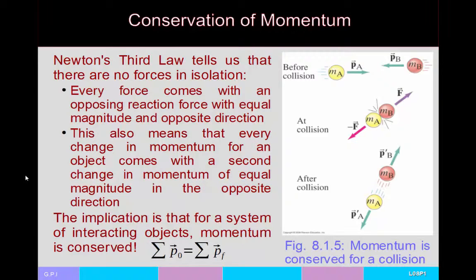Going back to Newton's laws applied to momentum: with Newton's third law, there are no forces in isolation. Every force — and hence every change in momentum per unit time — comes with a second change in momentum per unit time in the exact opposite direction. So for a system of interacting objects, the sum of initial momenta equals the sum of final momenta. This is conservation of linear momentum — our second conservation law in physics, after conservation of energy.